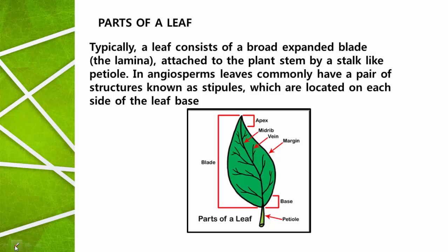Moving to the parts of a leaf: when a typical — that is, a standard — leaf is considered, it shows the following parts. One is the broad expanded blade. This green expanded part of the leaf is called the lamina, or leaf blade. It is attached to the plant stem by a stalk-like structure called the petiole.